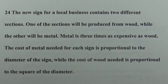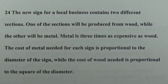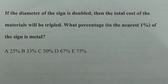The new sign for a local business contains two different sections. One section will be produced from wood, while the other will be metal. Metal is three times as expensive as wood. The cost of metal needed for each sign is proportional to the diameter of the sign, while the cost of wood needed is proportional to the square of the diameter. If the diameter of the sign is doubled, then the total cost of the material will be triple. What percentage, to the nearest one percent, of the sign is metal?